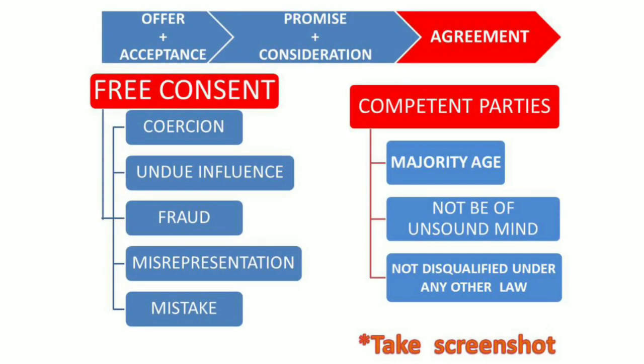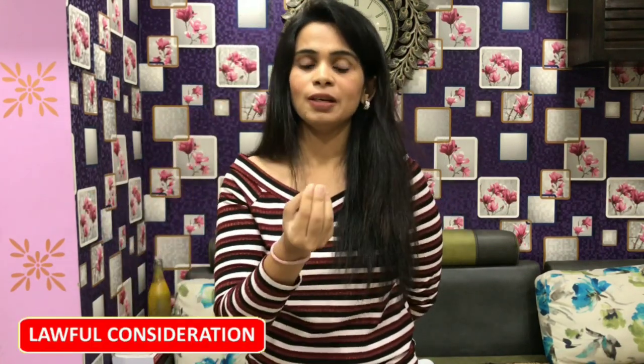To summarize so far: first point was agreement; second point was free consent, under which we saw C-I-F-M-M; third point was Section 11, competent parties. The fourth point is you must have lawful consideration — meaning what you receive in the contract must not be something that is not allowed under law. For example, you cannot say 'do this work and I will give you five boxes of cocaine, brown sugar, or heroin' — these are not lawful consideration.